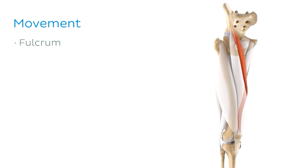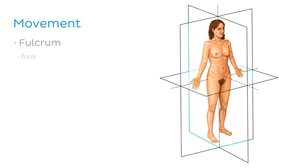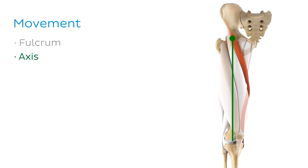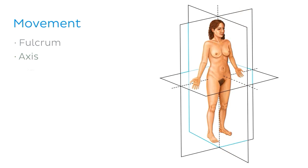In the body, this is usually a point within the joint. In some cases, an axis may be a more appropriate description than a fulcrum. While a fulcrum is a point, an axis is a straight line around which rotational movement happens. Each specific movement happens in a particular plane of motion, for example the sagittal plane or the coronal plane.